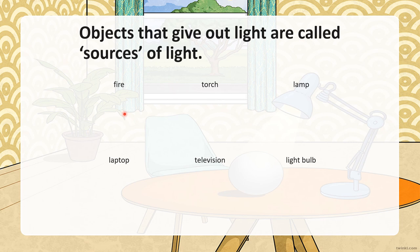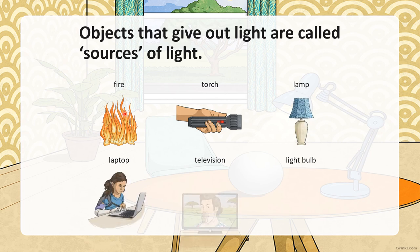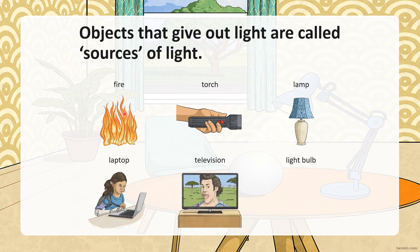Here are some examples: fire, torch, lamp, laptop, television, and light bulb. But our main source of light is the sun — sumber utama cahaya.